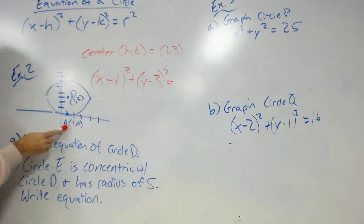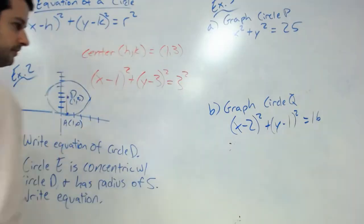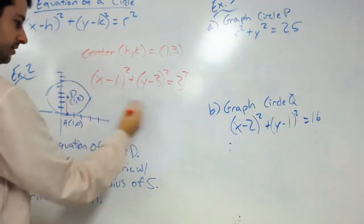Now our radius - it gives us a point at (1, 0). You can count or do the absolute value of the change in y, but that radius would be 3. So radius would be 3 squared.